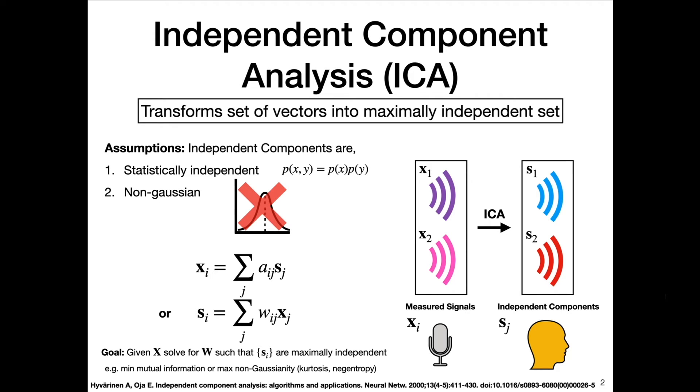Mathematically, the goal is as follows. Given some measured signals, given some data x, we want to solve for the matrix W such that the set of Independent Components, or the set of source vectors, s sub i, are maximally independent. This concept of maximally independent, what does that mean? How do we quantify that? There are two ways. You can define W in such a way that it minimizes the mutual information between all your Independent Components, or you can maximize the non-Gaussianity of the Independent Components defined by this W matrix.